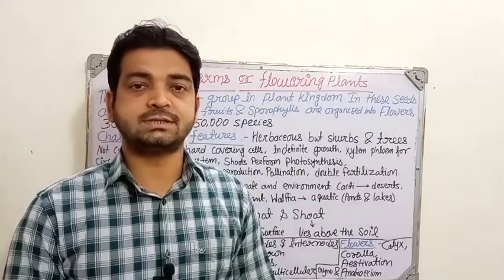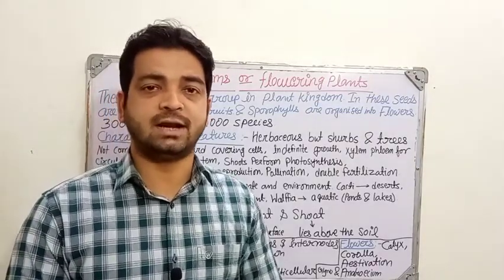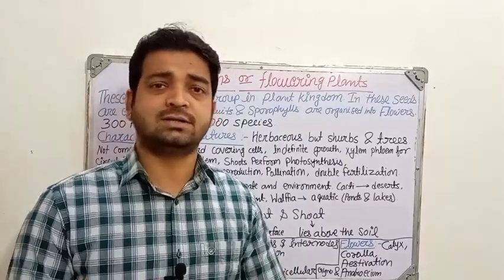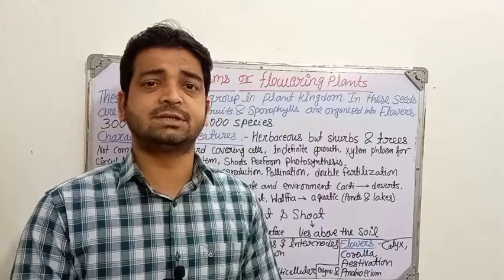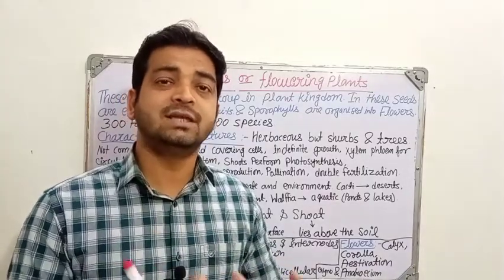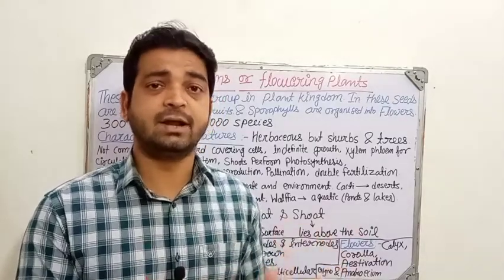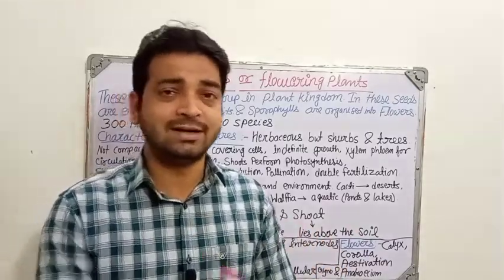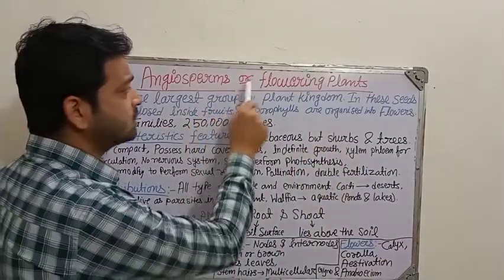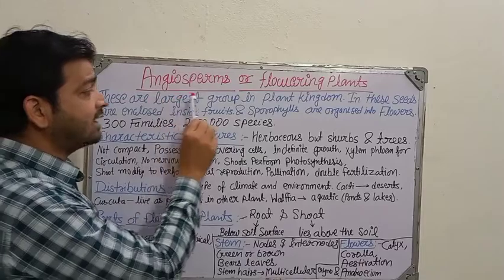Hello students, now we are going to discuss about the angiosperms, or flowering plants. Whatever the flowering plants it is there into the earth — what are their characteristics, what are the parts they compose, and what is their role into the living organism or into the plant kingdom. This is the angiosperm, also known as flowering plants.